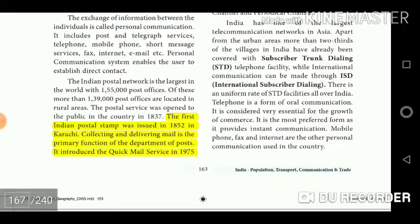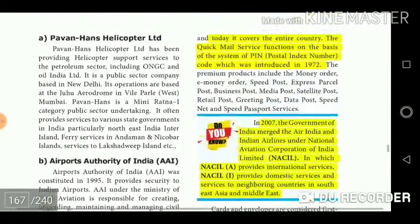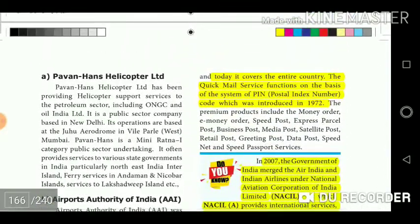The first Indian postal stamp was issued in 1852 in Karachi. Collecting and delivering mail is the primary function of the Department of Posts. It introduced the Quick Mail Service (QMS) in 1975, which today covers the entire country. The Quick Mail Service functions on the basis of the PIN (Postal Index Number) code system, which was introduced in 1972.